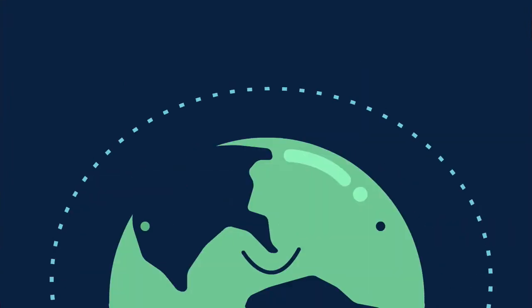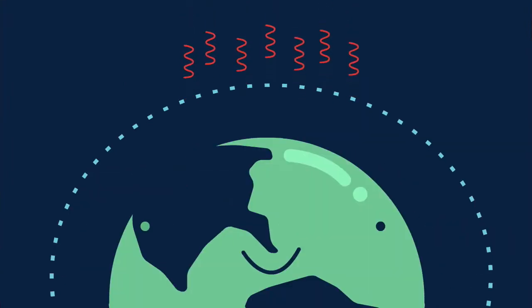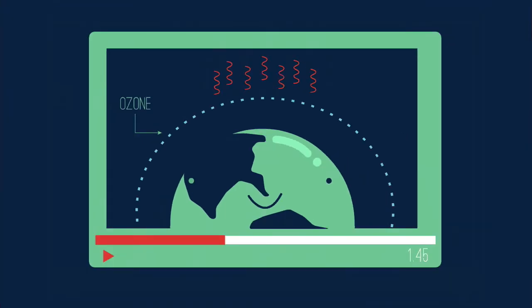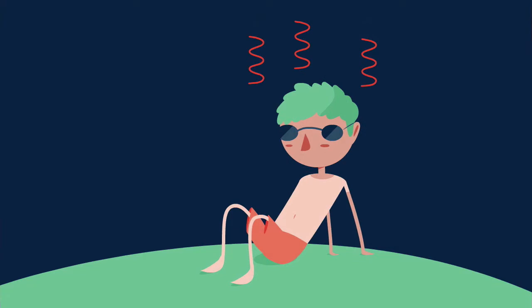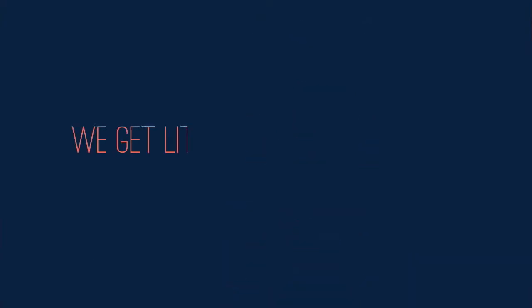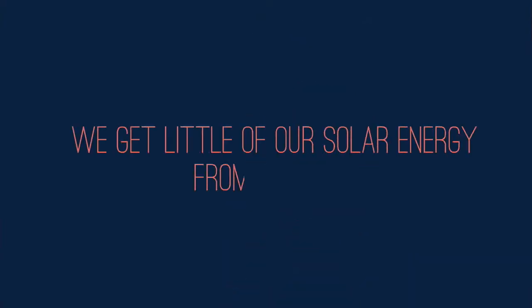Most of the small amount of ultraviolet is trapped in the upper atmosphere by ozone — and there's a linked video for you to see on that — although enough gets through to damage our skin if we stand too long in the sun. And we only get a little of our solar energy from infrared or heat radiation.